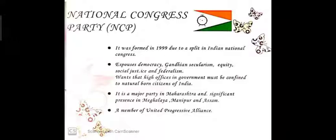The NCP is a major party in Maharashtra with significant presence in Meghalaya, Manipur, and Assam. Sometimes questions come up: why only these six national parties exist — it's because we have a multiparty system. In 2004, the NCP was a coalition partner of the United Progressive Alliance (UPA), whose main head was the Congress party, managed by Mrs. Sonia Gandhi, also known as the High Command. Now let's move to regional parties.